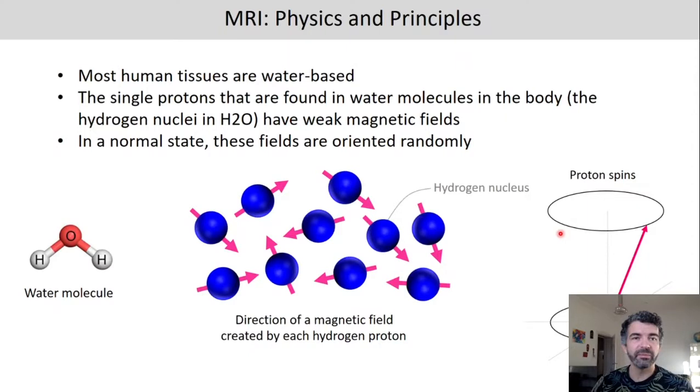So let's talk a little bit about the physics and basic principles of MRI. Most human tissue is water-based and water, as you know, consists of two H molecules and one oxygen molecule, so two hydrogen, one oxygen molecule. And the hydrogen molecule has a nucleus which is a single proton. And single protons are like little dipoles. They have a very weak magnetic field. And in a normal state, these fields are oriented randomly, which is why if you were just to measure the magnetic field of water, you wouldn't find anything because on a large scale there is no magnetic field induced by the hydrogen nuclei here.